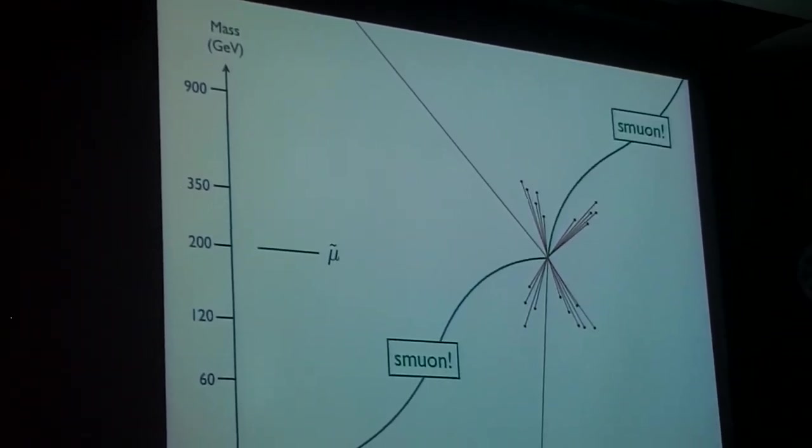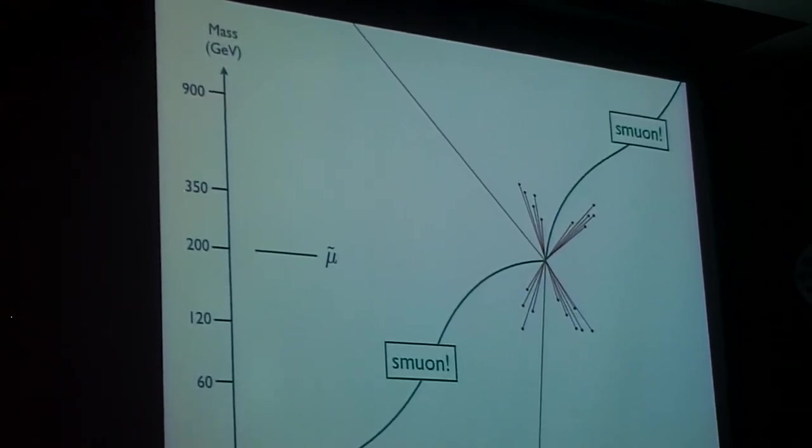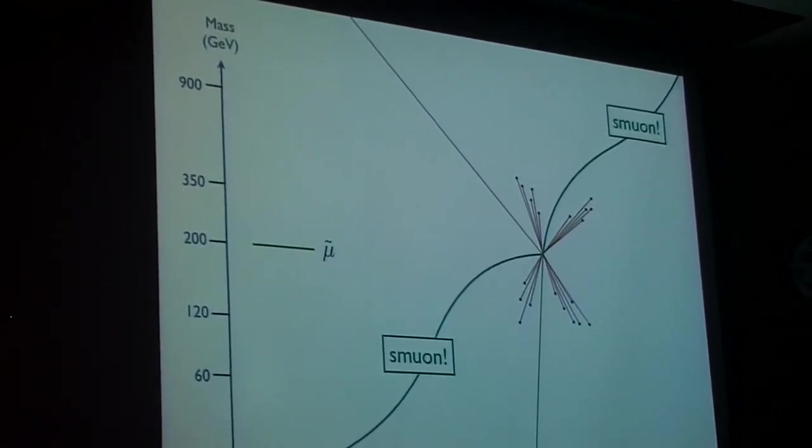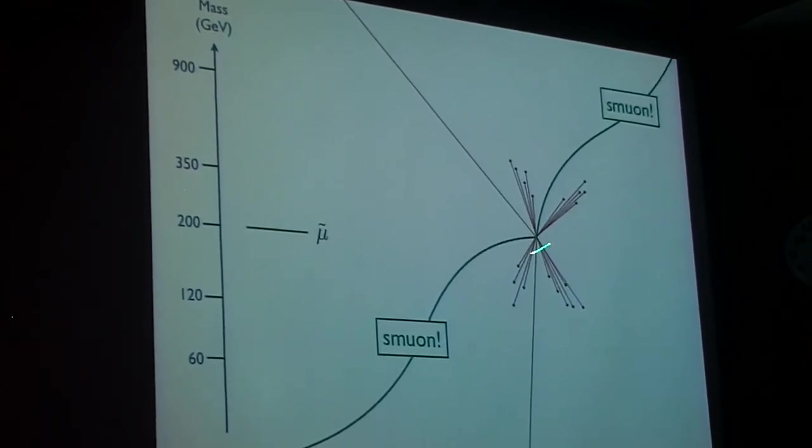Here it is, the supersymmetric partner of the muon, screaming through your detector. You see two of them. They curve oppositely, because they're going to have equal and opposite charges. This smuon is going to play a key role in the story.